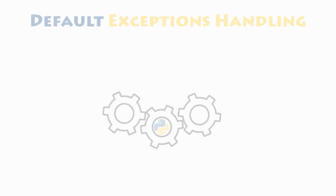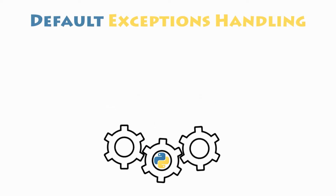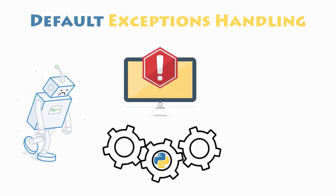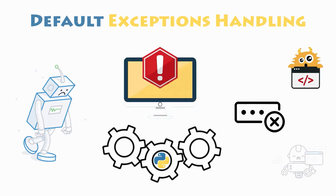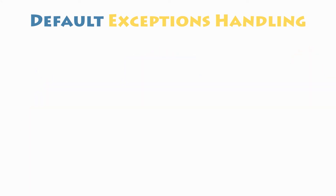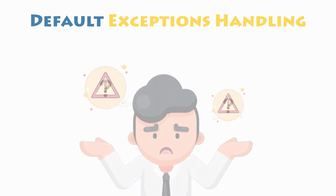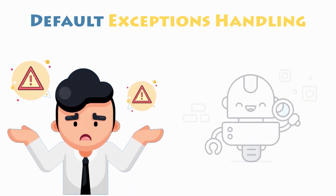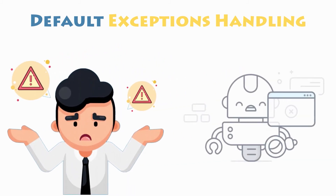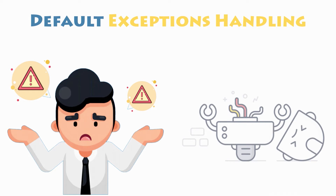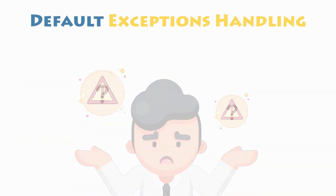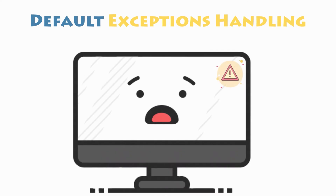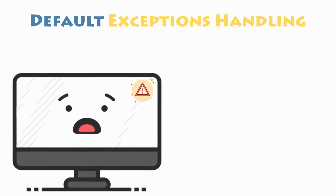When executing Python code, different errors may occur: coding errors made by the programmer, errors due to wrong input, or even other unforeseeable errors. When your program encounters an error and something goes wrong, the Python interpreter stops the current process and passes it to the calling process until it is handled. This is the default exception handling behavior in Python.